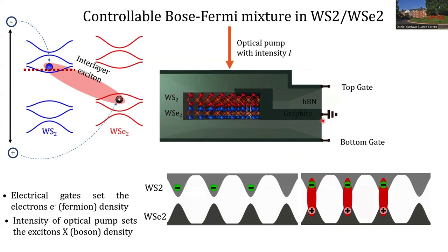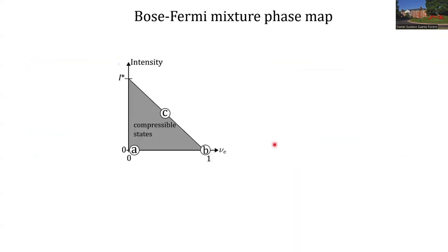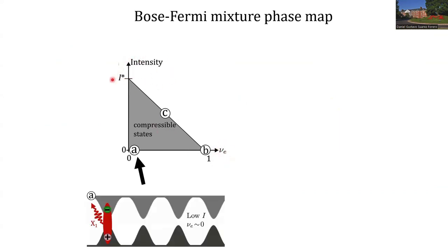We have two independent mechanisms to control the density of fermions — in this case electrons — and bosons — in this case excitons. The interplay between these two parameters allows us to map the phases achieved in this material by the electronic filling factor and the pumping intensity. For example, in the limiting cases, we can have an empty structure where a few excitons are created, and then they recombine, and this optical signal is the signal we analyze in our experiments.